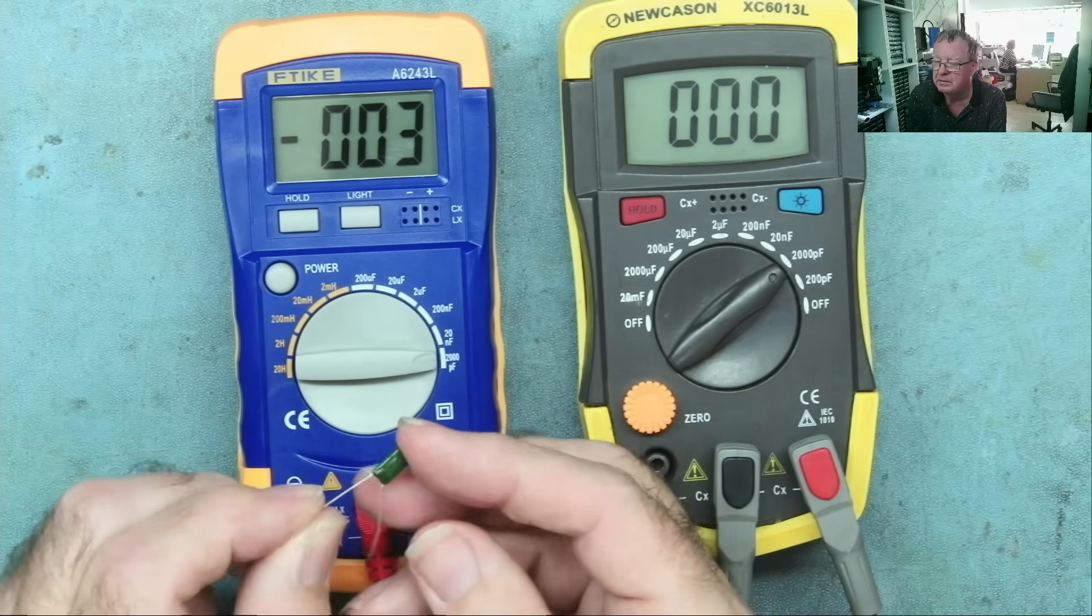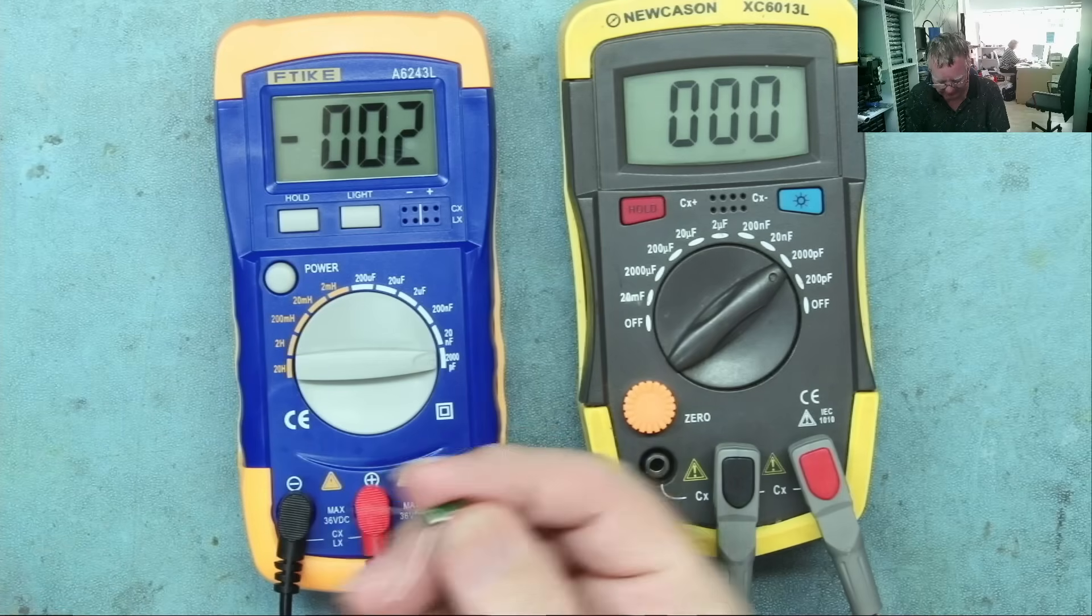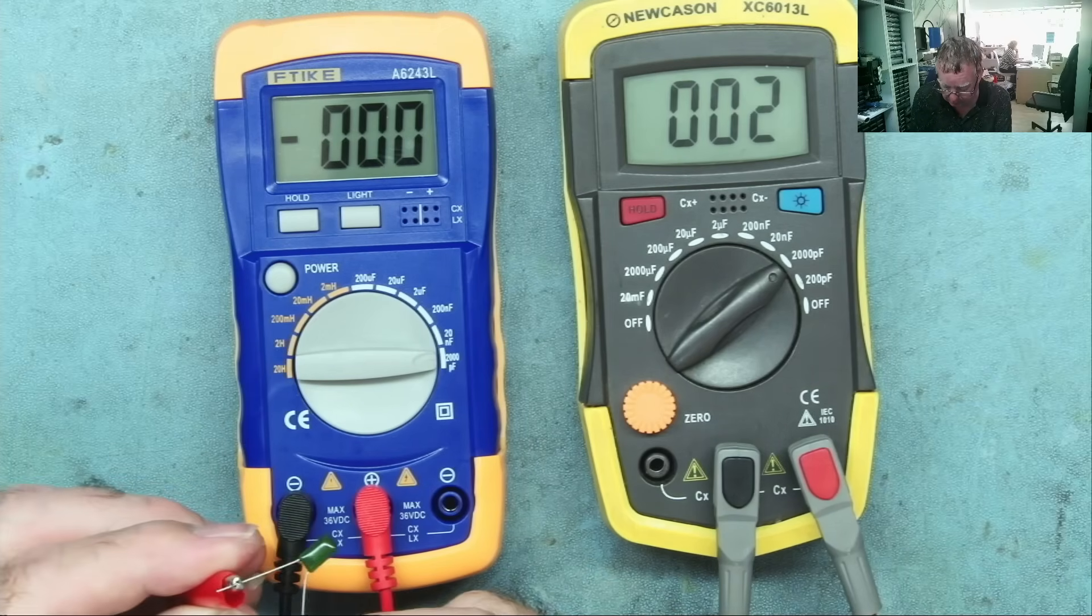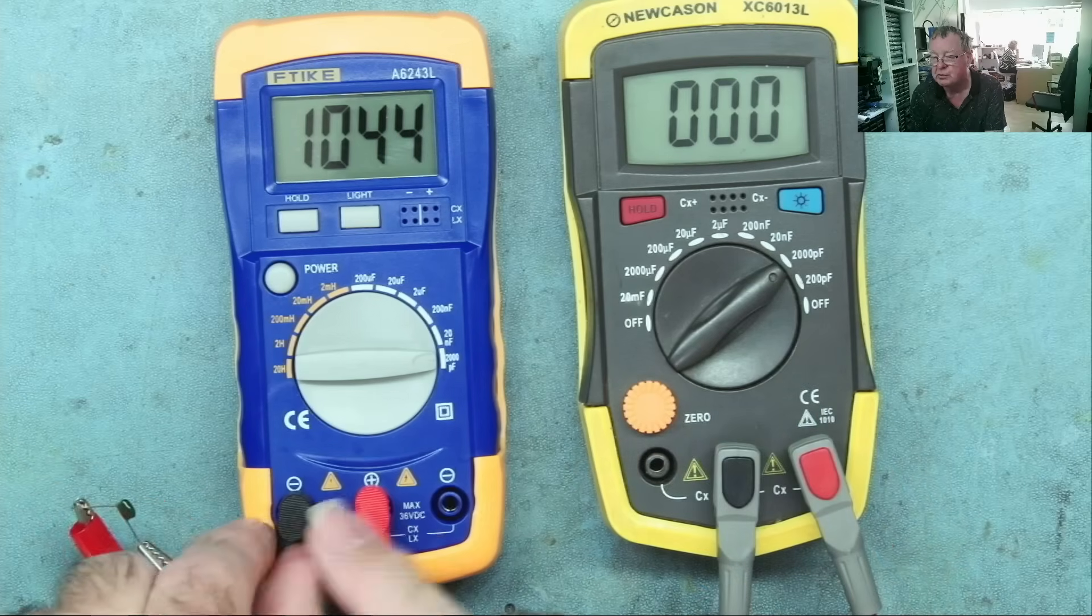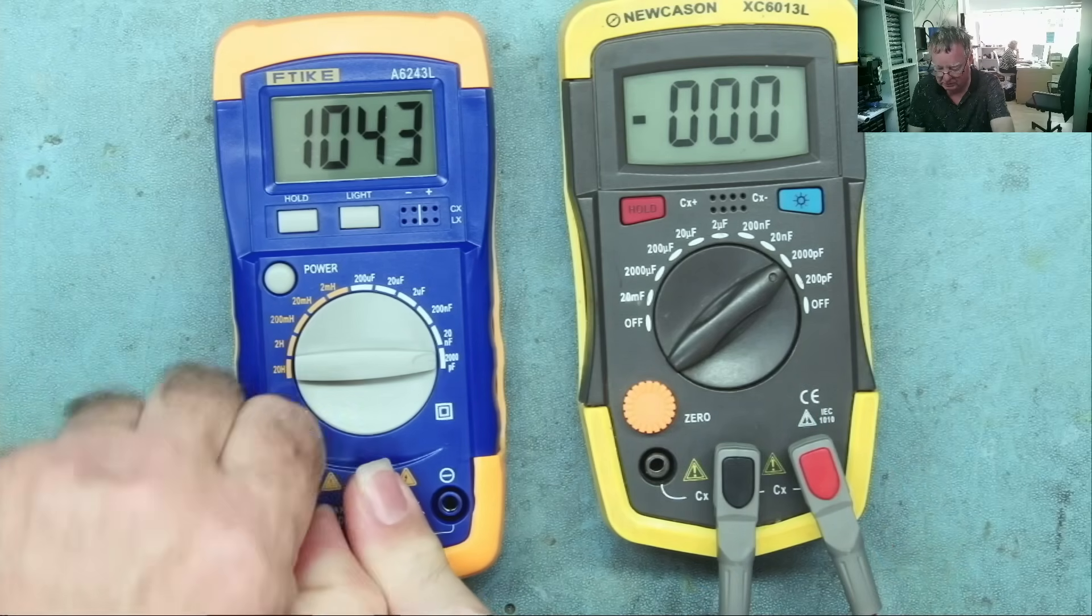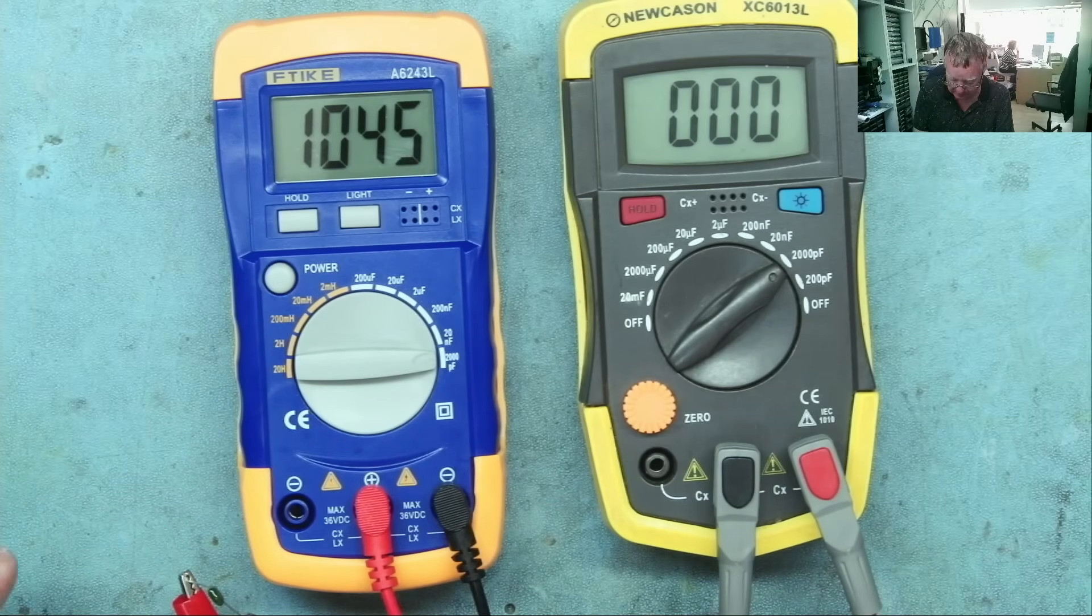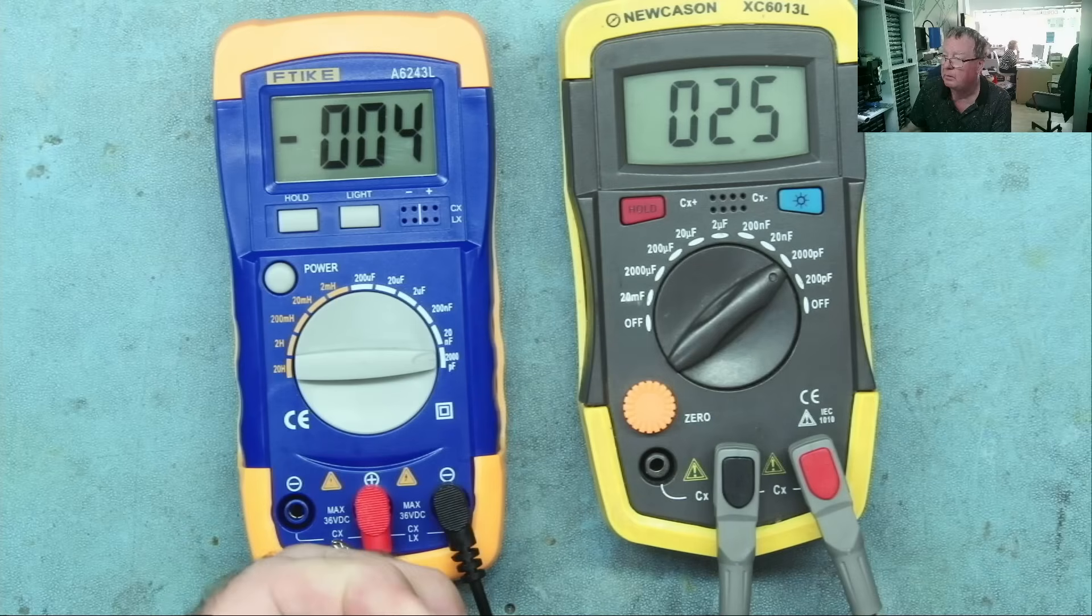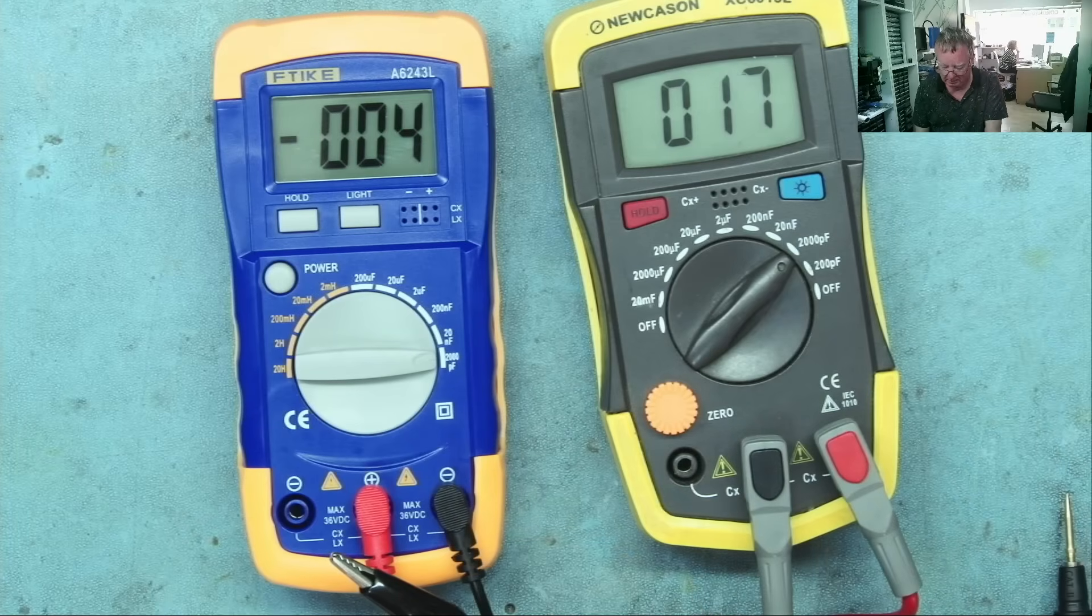This is a 1 nanofarad or 1000 picofarads. These are not close tolerance. I think they're 5 or 10 percent, so we can't expect it to be particularly accurate. It reads 1044. I'm going to just swap the lead from this side to this side, just to see that it is actually the same. Yes, it reads the same. Put this in my other capacitance meter, which is not calibrated in any way. We can't say exactly which is the most accurate. But it's reading very similar.